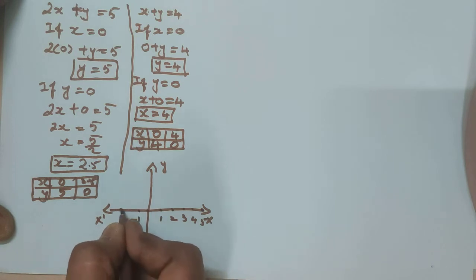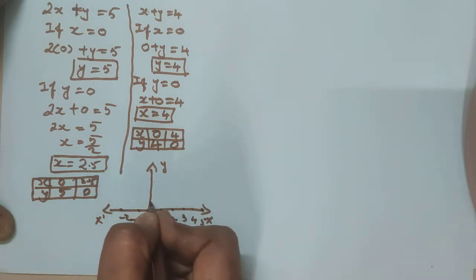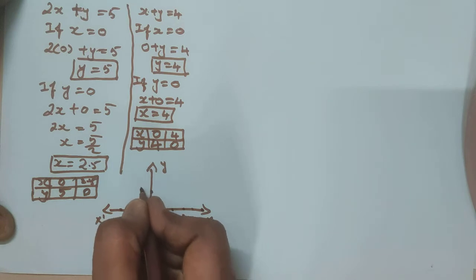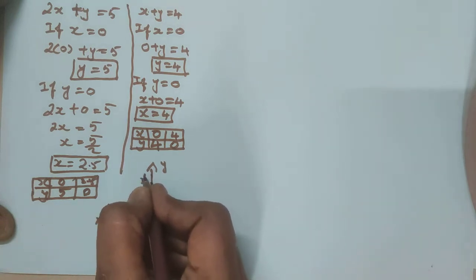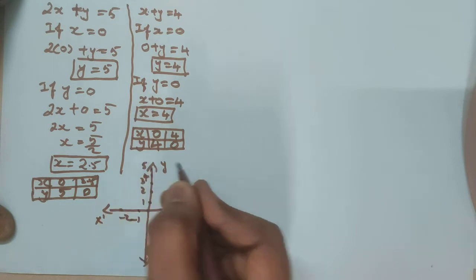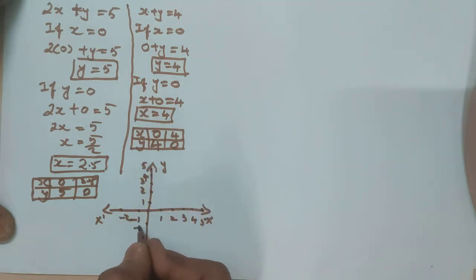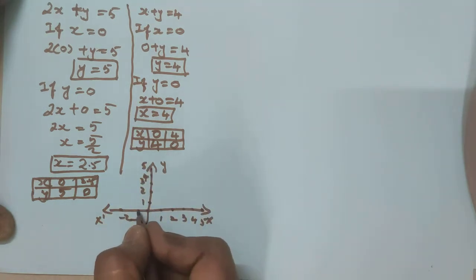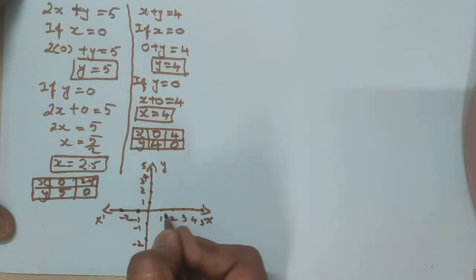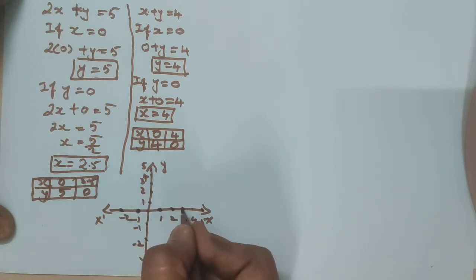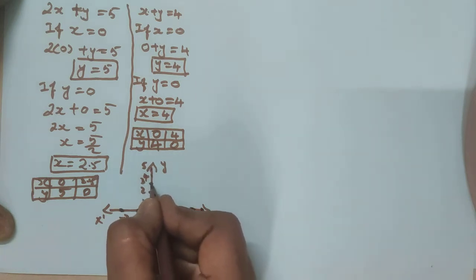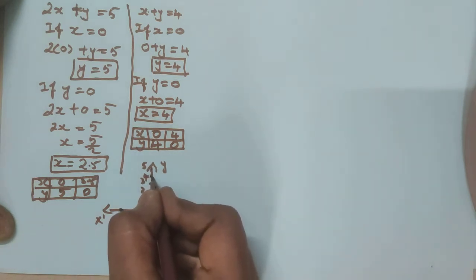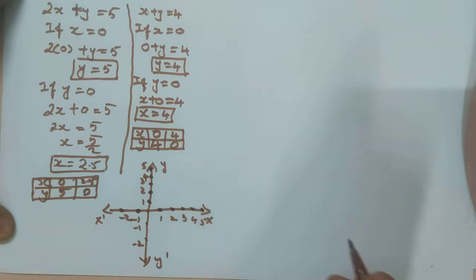Minus 1, minus 2 on the negative x-axis. And on the y-axis: 1, 2, 3, 4, 5. Minus 1, minus 2 on the negative y-axis. Have you able to see the points? Each 1 cm. I have drawn roughly here. Please draw on a graph sheet and find out the exact point.